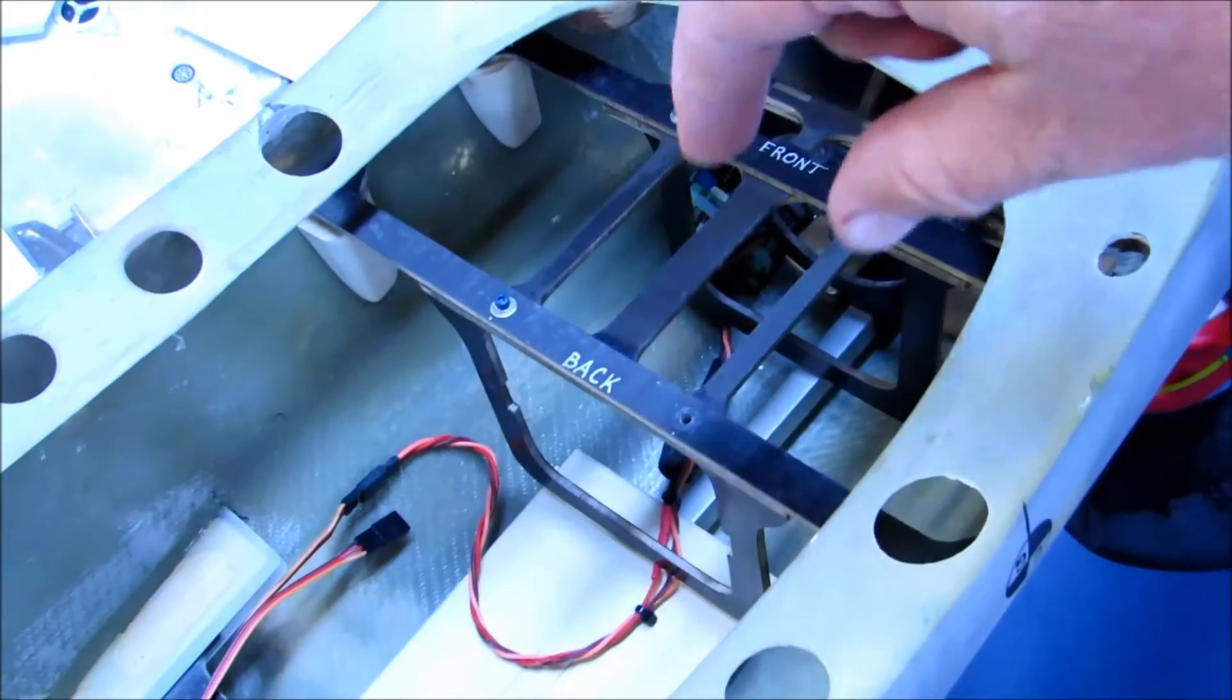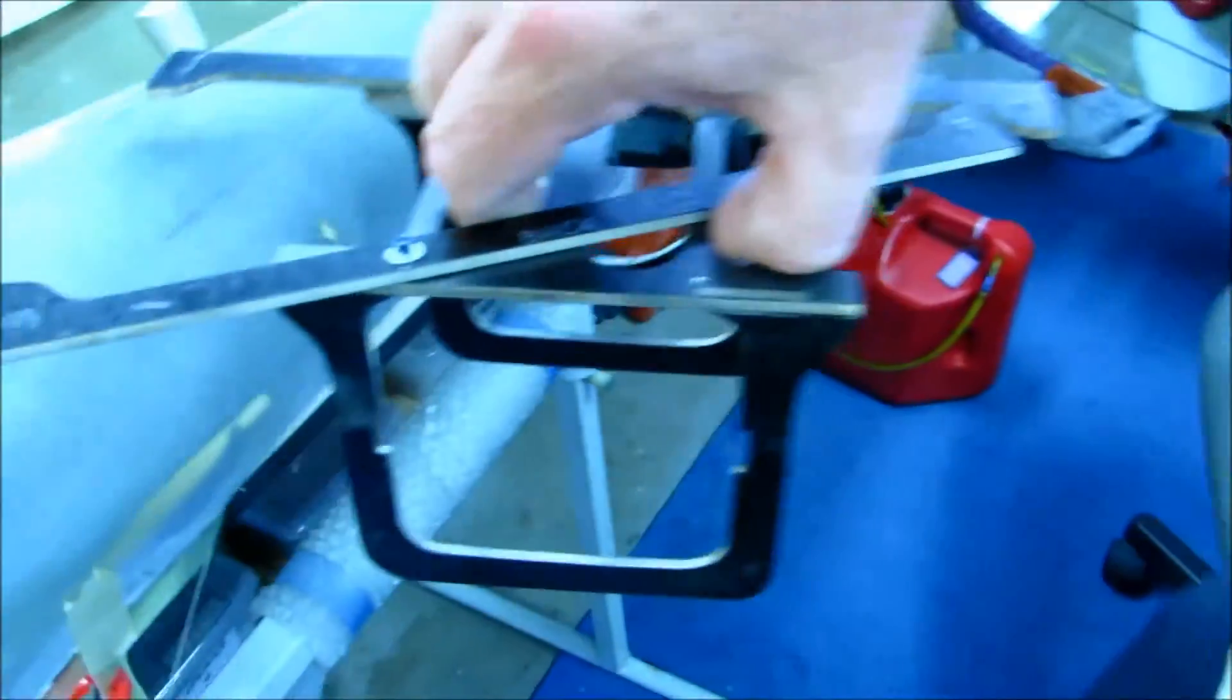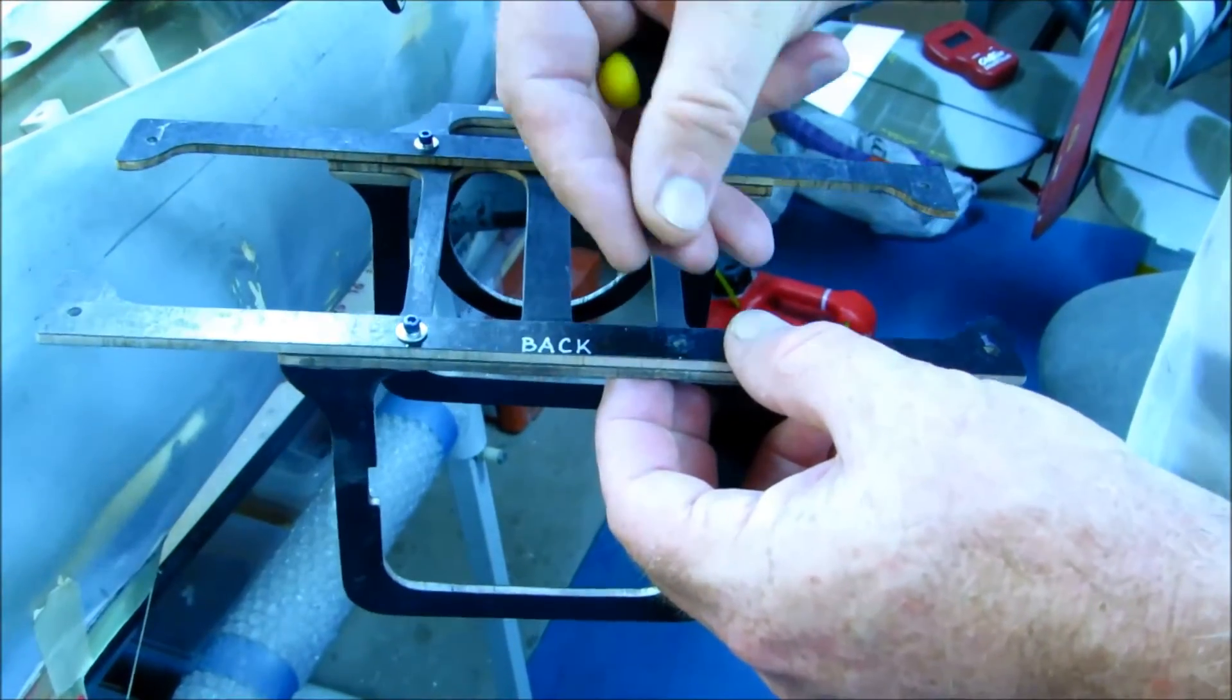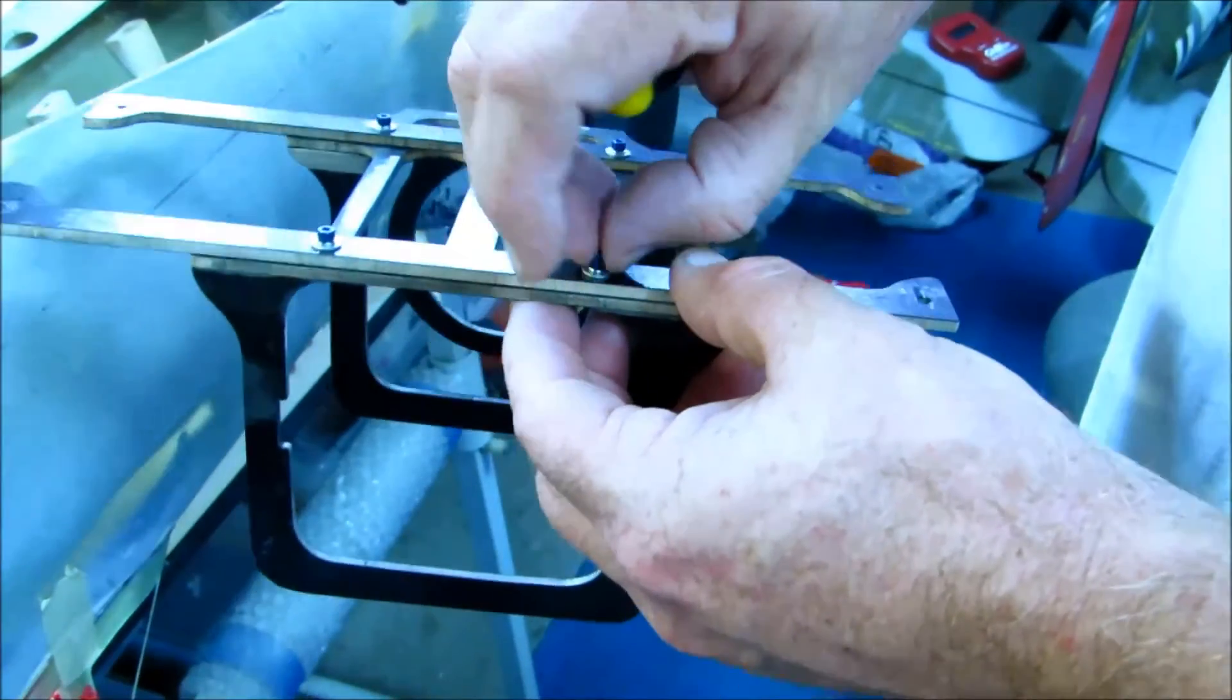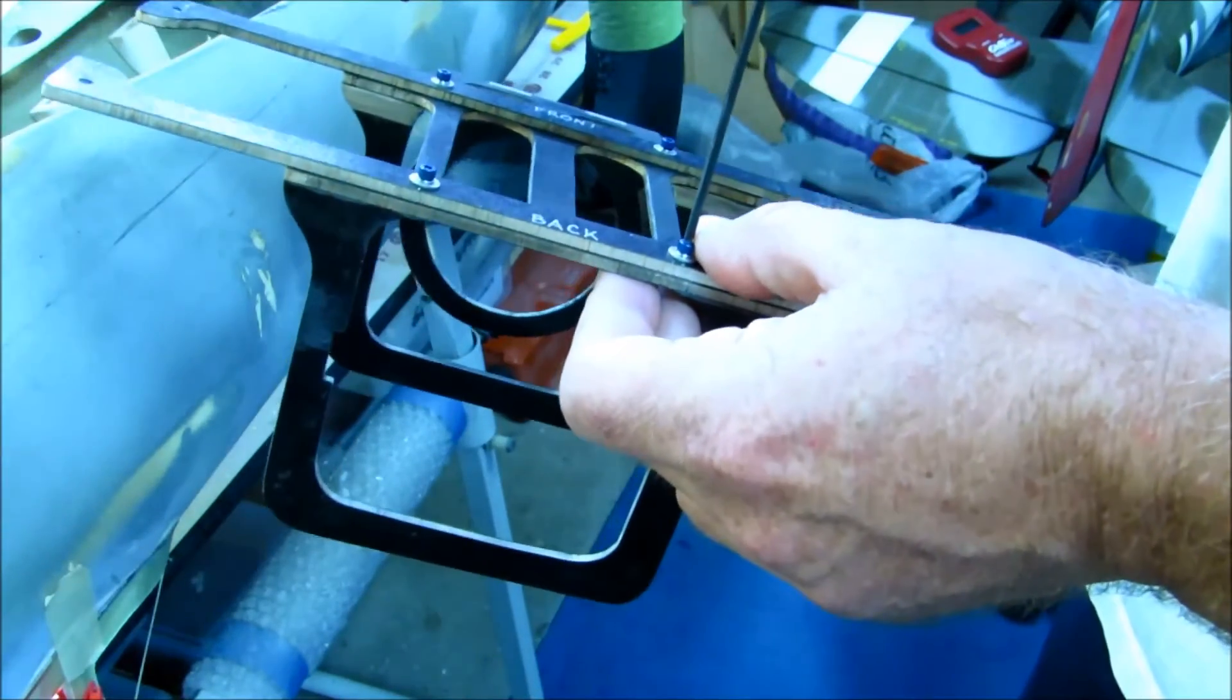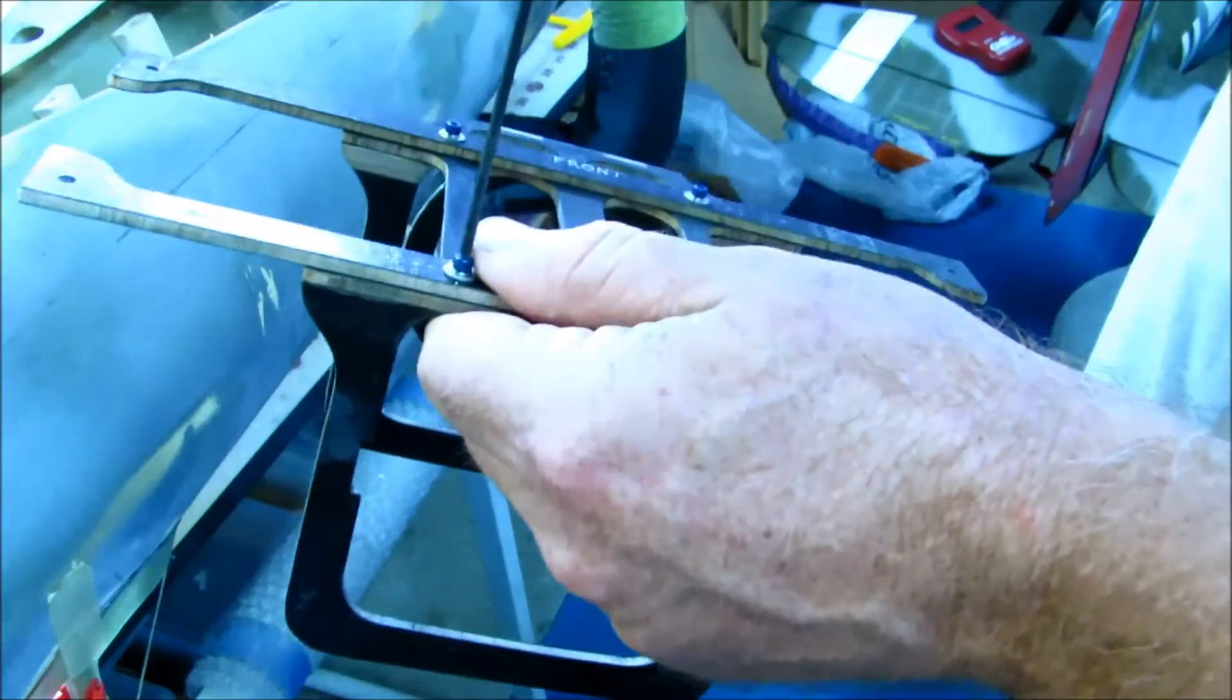And ultimately the question is, does this fuel tank holder frame design, is it actually strong enough to do the job? So figuring that this is a scale airplane being flown in a scale manner, it's probably going to be seeing something like 5 G's. But we all know that sometimes we get a little heavy with our thumbs. So maybe this airplane sees 10 G's.